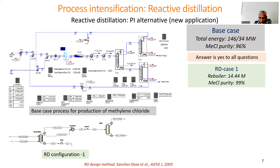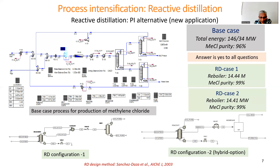We can see already from the results that the reboiler duty for the reactive distillation column is much lower, and the combined reboiler duty of the two columns is much lower than the base case. We can also replace the second distillation column with a membrane unit, and the combined reboiler duty is much better, as is the product purity. So we have achieved significant improvement through intensification, and we managed to find out very quickly for the given flowsheet whether process intensification was possible.